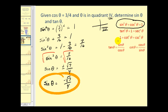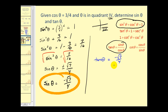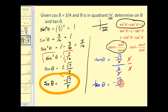Next, to find tangent theta, we use the quotient identity since we know both sine theta and cosine theta. Tangent theta equals sine theta over cosine theta, which is negative square root of seven over four, divided by three-fourths. Multiplying the top and bottom by four, we get tangent theta equals negative square root of seven over three.